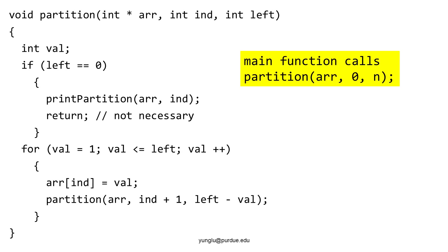Next, we are going to study the partition function carefully. We will see how the stack memory changes as this recursive function progresses. For simplicity, I will not mark the return location. This function has no return value, thus there is no value address. The partition function is actually quite short. At the top, it checks the stop condition. If the number to be partitioned is zero, the function prints the array and returns.